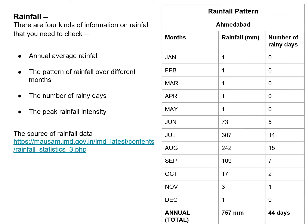Rainfall is an important measure in the whole calculation. There are four kinds of rainfall information you need to check. Number one is average annual rainfall of a city — in our case, Ahmedabad has 757 mm over 44 days. Annual average rainfall gives an overall picture of the total amount of water that can be collected. Second is the pattern of rainfall over different months — whether it rains most of the year or only during a certain part of the year.